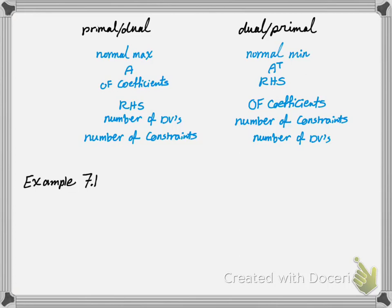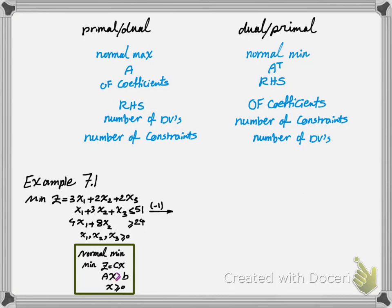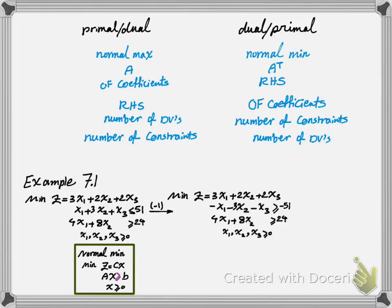So let's take a look at example 7.1 of your textbook. This is the linear programming problem given in example 7.1. Now to write the dual programming of this linear programming problem, first we have to make sure it's a normal min problem. In a normal min problem everything should be greater than or equal. So if I look at these constraints, the first one is not in normal form. So I have to multiply it by negative one so that it turns into a greater than or equal constraint. If I do that, this is the new LP I get where everything is greater than or equal in the constraints. So now I can write a normal max problem for this min problem as its dual programming.